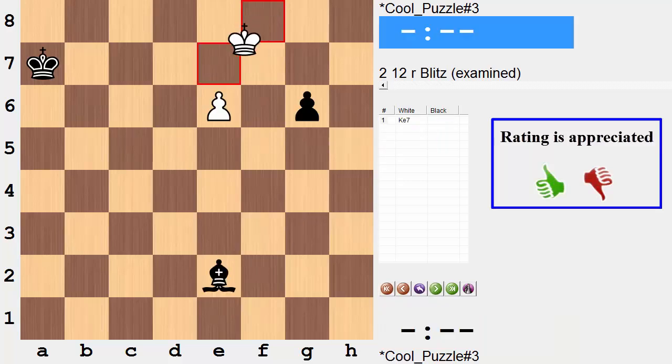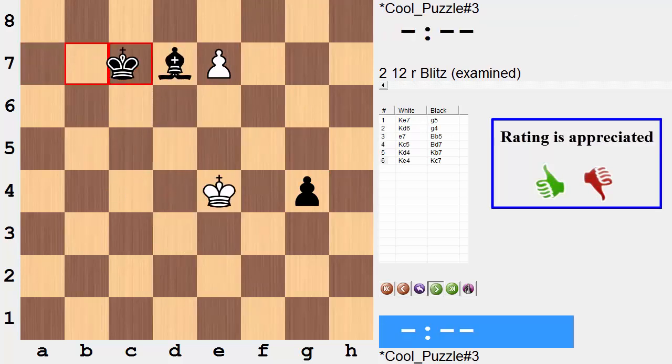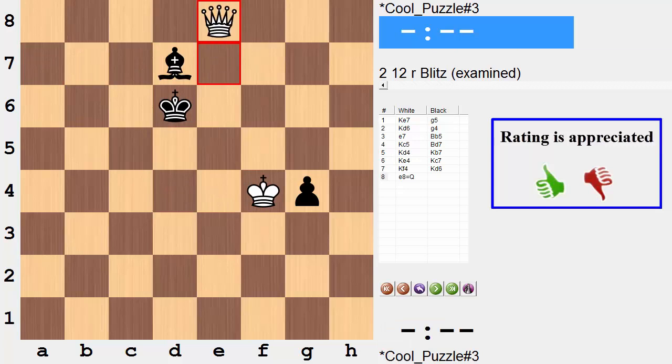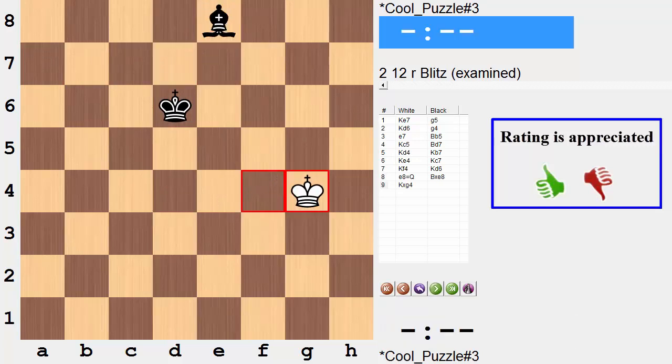But again, just to recap this here being the solution. Ke7, d6, c5, where he eventually gains a tempo against the bishop. And we'll be in a position to hunt that pawn down just in the nick of time here with this deflection. e8 equals queen, and then king takes pawn.